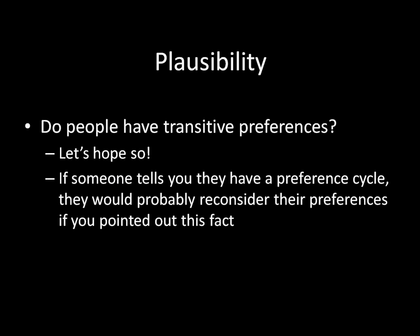What about the plausibility of transitivity? I really hope that people have transitive preferences. It's kind of embarrassing if, in an interview about your preferences, you accidentally reveal a preference cycle — that you like A to B, B to C, and C to A. If someone pointed that out to you, you'd probably want to correct yourself and think, that's kind of weird. You'd want to recover from that and get rid of the cycle. So having transitive preferences inside an individual is actually a very reasonable thing.